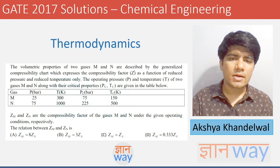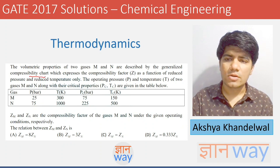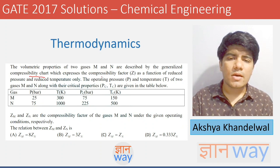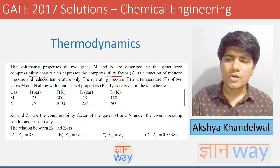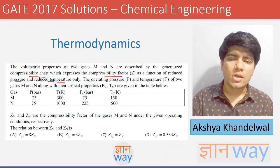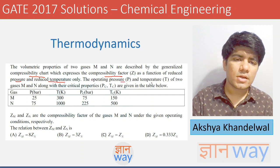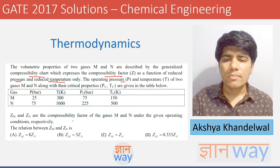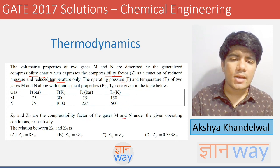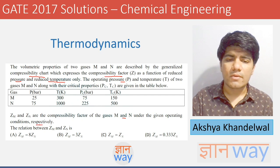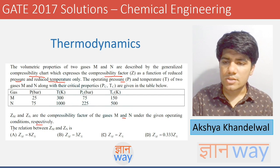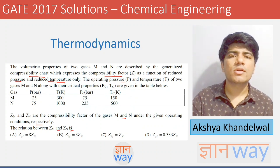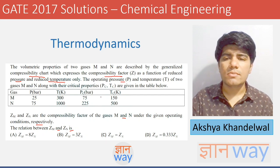The first question: the volumetric properties of two gases M and N are described by the generalised compressibility chart, which expresses the compressibility factor Z as a function of reduced pressure and reduced temperature only. The operating pressure and temperature T of both gases M and N, along with their critical properties, are given in a table. ZM and ZN are the compressibility factors for gases M and N respectively. We have to find the relation between ZM and ZN.